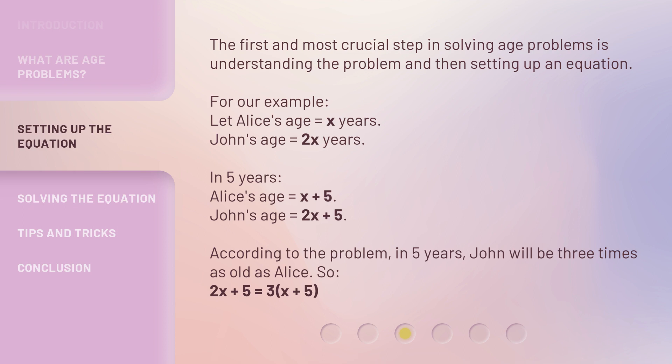In five years, Alice's age = x + 5. John's age = 2x + 5. According to the problem, in five years, John will be three times as old as Alice. So, 2x + 5 = 3(x + 5).